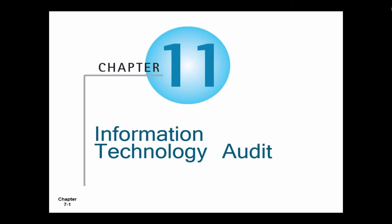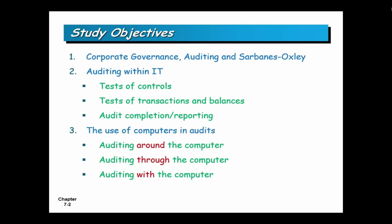Information technology auditing. I'm going to look at this from two perspectives: how do you use information technology in an audit, and how do you audit information technology? Because it's a law that we have to talk about Sarbanes-Oxley in every class, we'll start off and talk a little bit about Sarbanes-Oxley and Enron. Then we'll talk about how do you audit IT, how do you audit your computer systems, how do you test your controls, how do you test your transactions, and what's the auditor's responsibility at the end of that audit? Then we'll talk about how do you use computers in audits — auditing around the computer, through the computer, and with the computer.